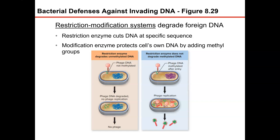Bacterial cells methylate their own DNA at regions where their own restriction enzymes would normally cut, because restriction enzymes don't distinguish phage from bacterial or human DNA — they only recognize a specific nucleotide sequence. When phage DNA enters the cell, if it's not methylated at that same region, the phage DNA gets degraded and there is no viral replication. But if it is methylated, the virus can replicate and the restriction enzymes can't stop it.